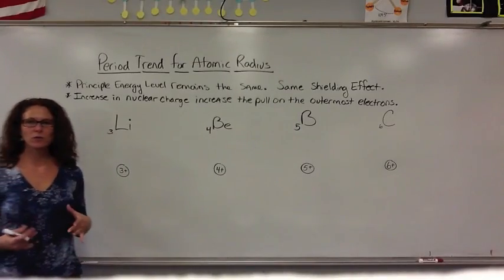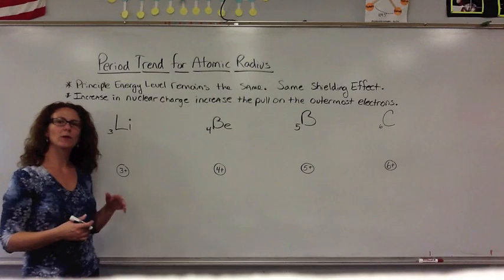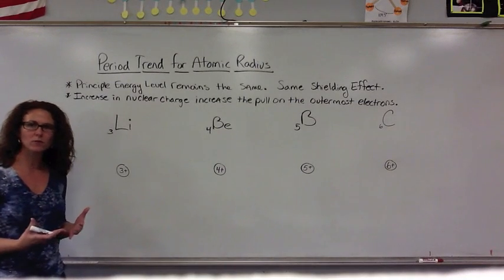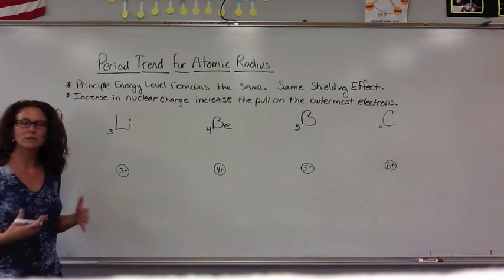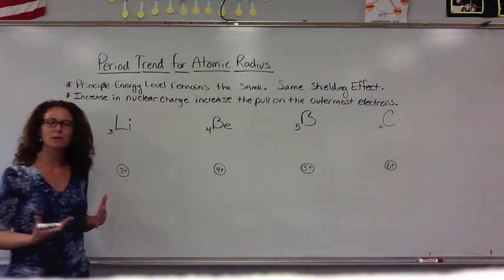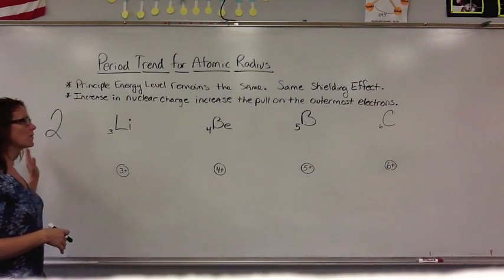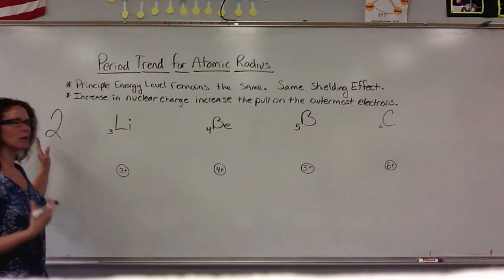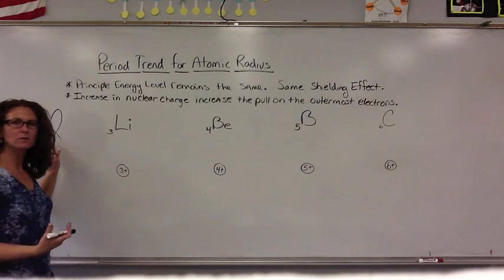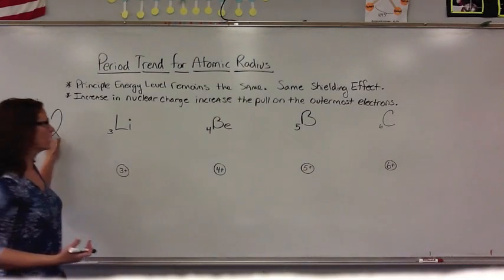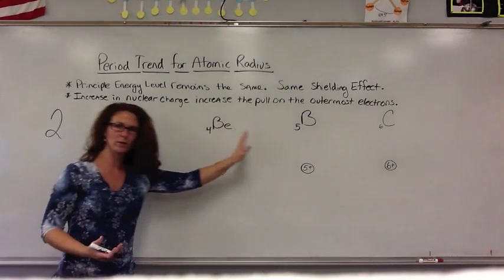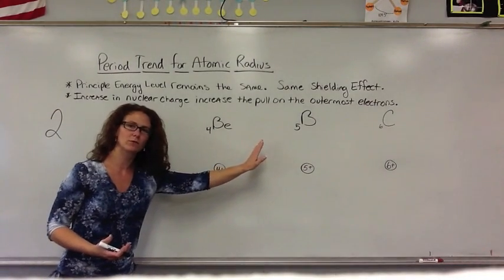Here we have a situation where we're going to talk about the period trend for the size of atoms and atoms' radius — how the atomic size compares as you move across a periodic chart from left to right.